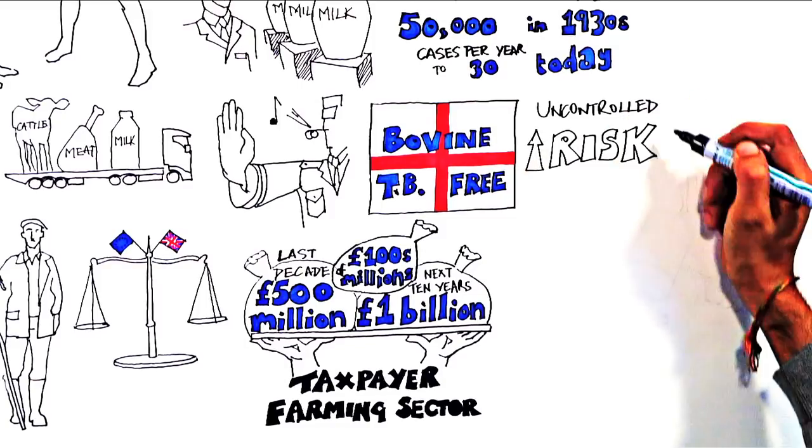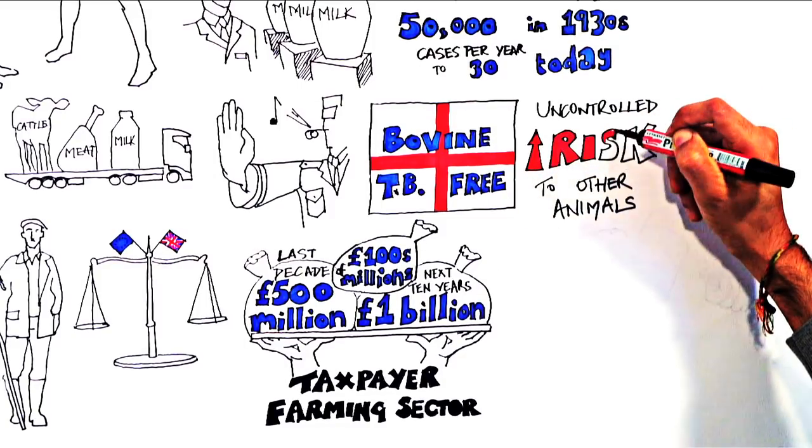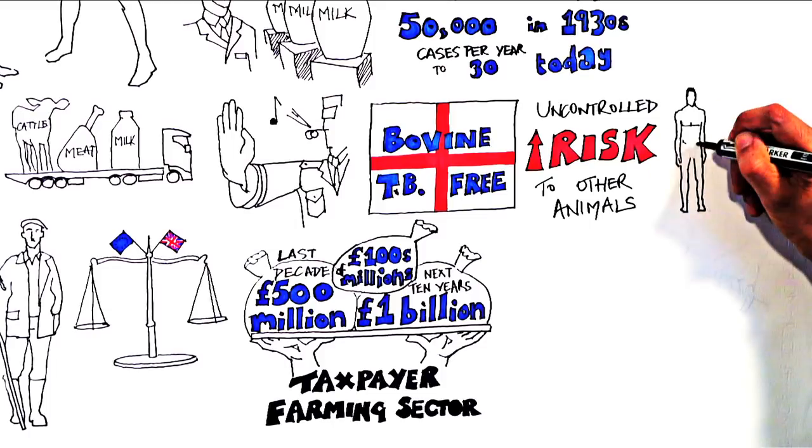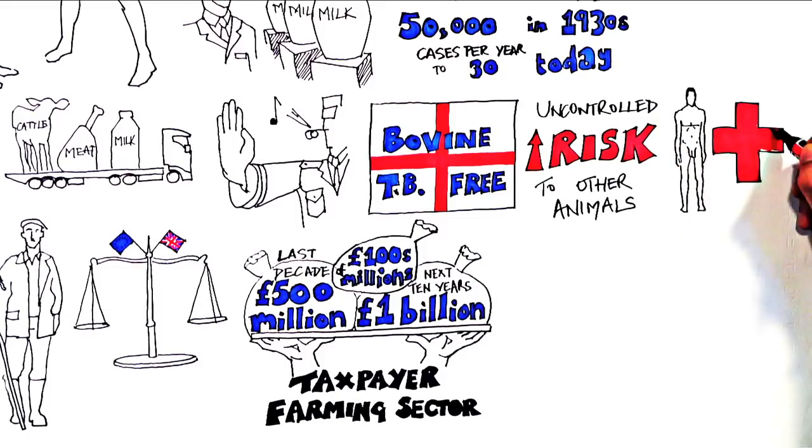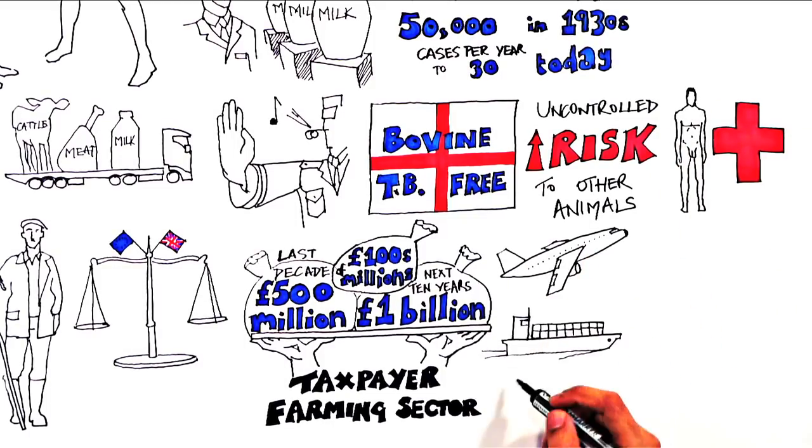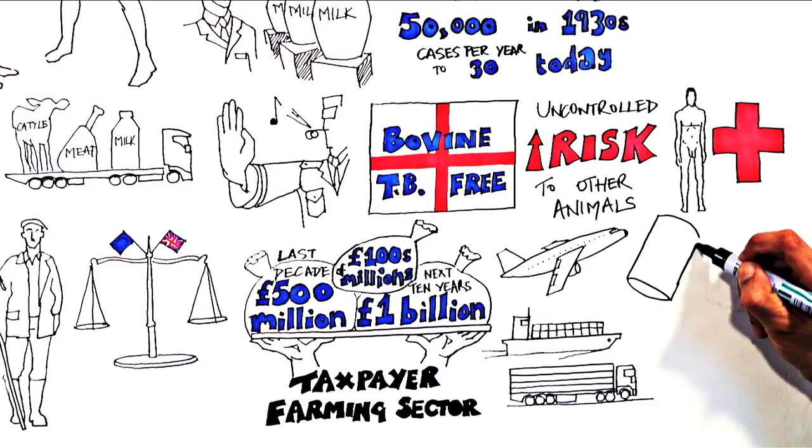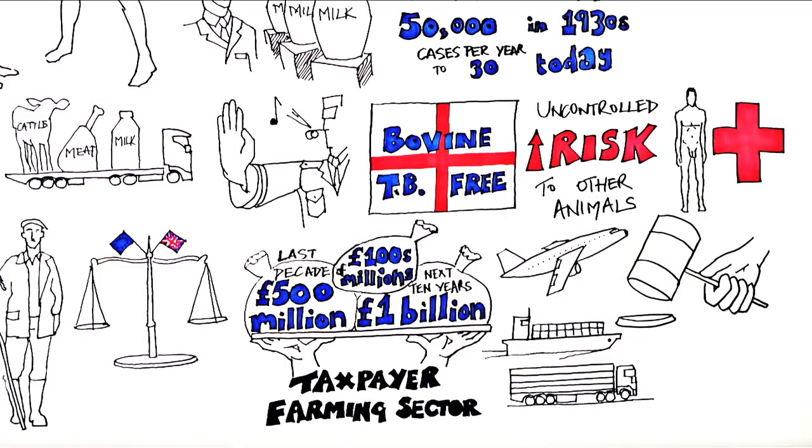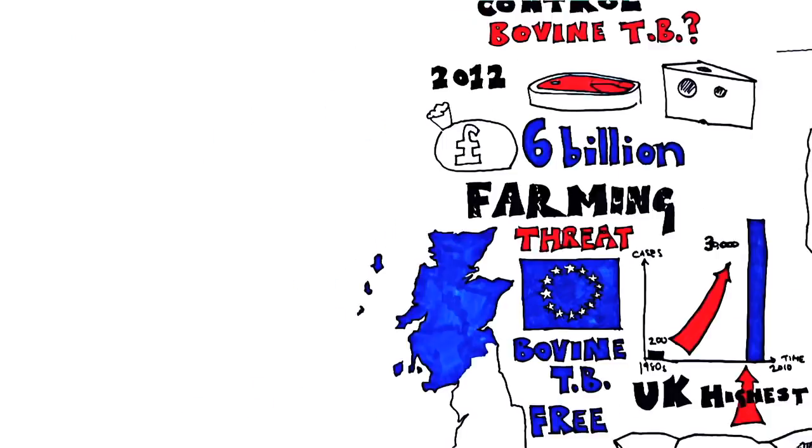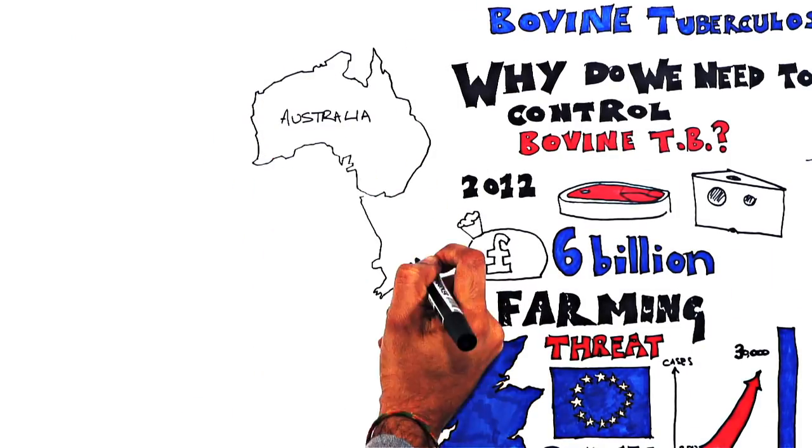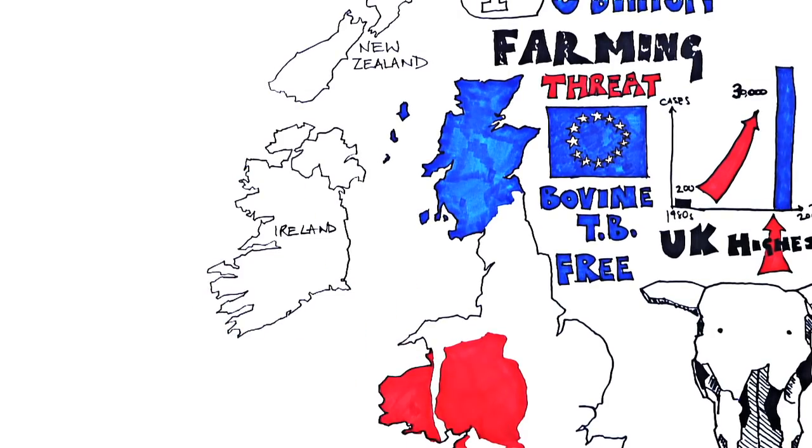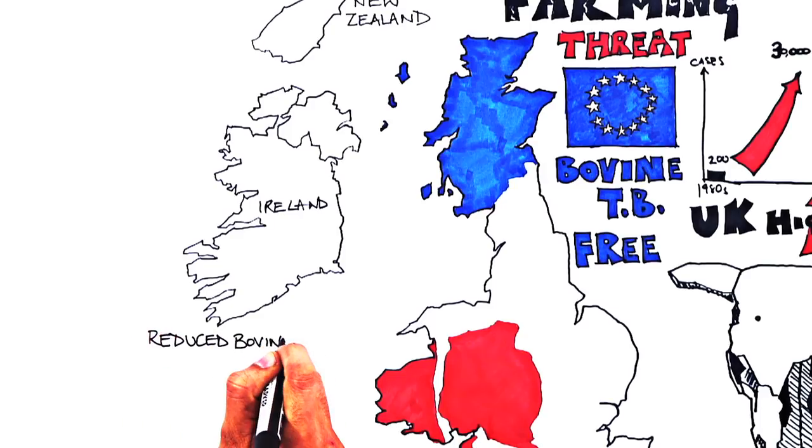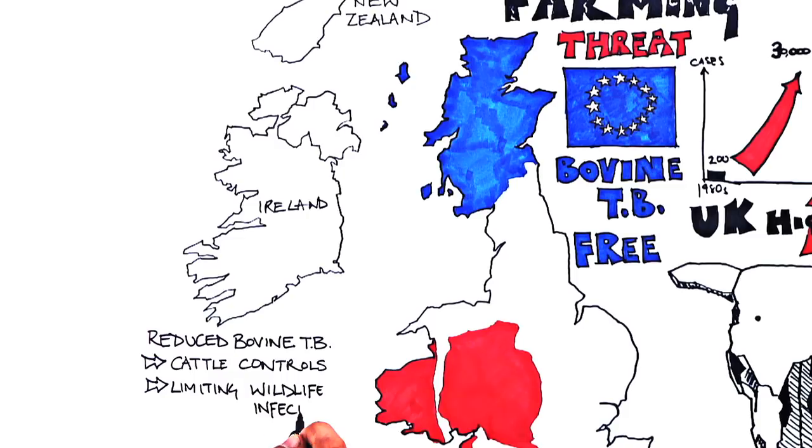Leaving bovine TB uncontrolled would increase the risk of spread to other animals and to humans, with impacts on health and welfare, further restricting our ability to trade internationally and bring us in breach of the law. Meanwhile, other countries such as Australia, New Zealand and Ireland have successfully reduced bovine TB by using cattle controls and limiting the amount of infection in wildlife.